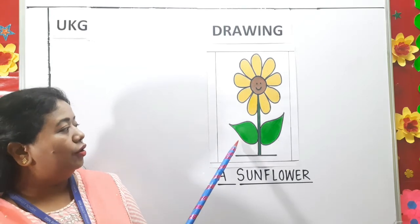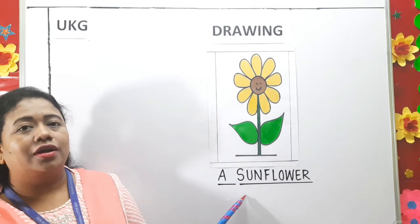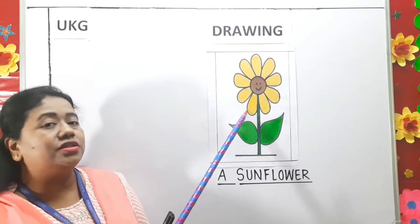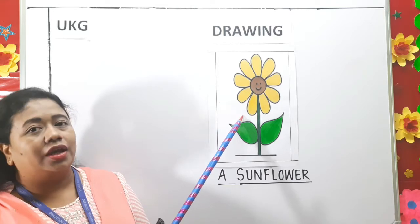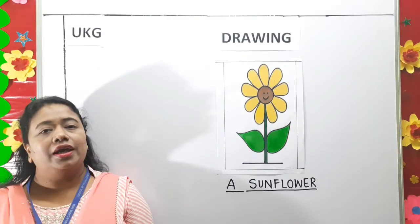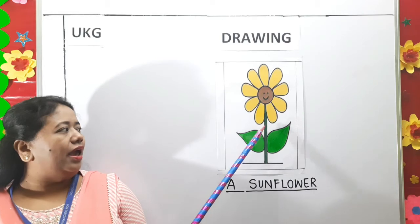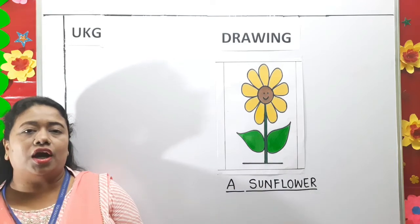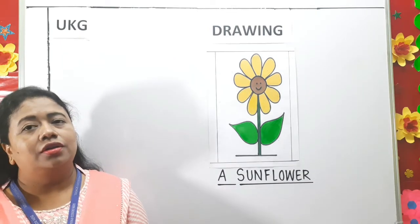Children, do you all know what is this? This is a sunflower. Sunflower is a very famous plant in the world. It is a bright yellow color flower. It always faces the sun. It is a bright and beautiful flower. It needs sunlight for its better growth. It has a long thin green colored stem. Sunflower seeds are used to make oil.